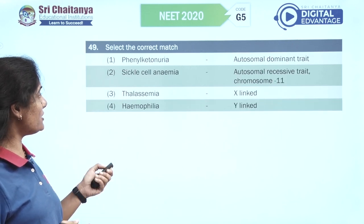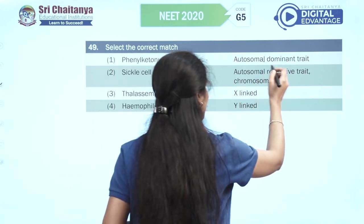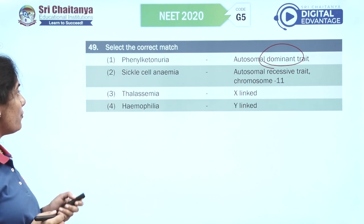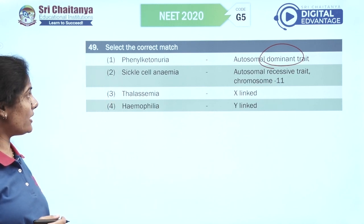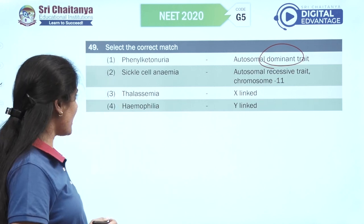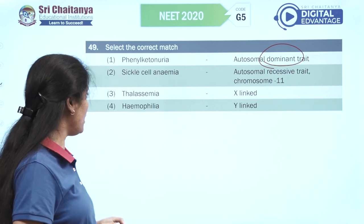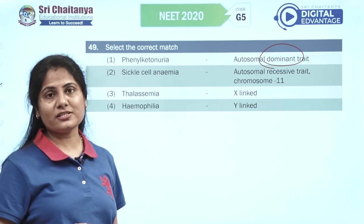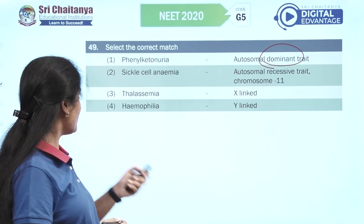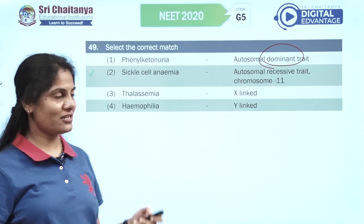Phenylketonuria is autosomal recessive, not autosomal dominant — that's the correction. Sickle cell anemia is an autosomal recessive trait on chromosome 11. Thalassemia is definitely not X-linked, it's autosomal. Hemophilia is not Y-linked, but X-linked. The second option is the right option.